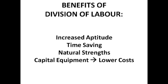Capital equipment is also a benefit — specifically that the firm can now use it in a more efficient manner. Because the firm is producing more due to division of labour, it's more worthwhile to buy equipment, and it can also afford the equipment because it's selling more. This capital equipment increases productivity, so costs fall even further and average costs just plummet, which is really good for a firm that wants to make profits — which is basically all firms.